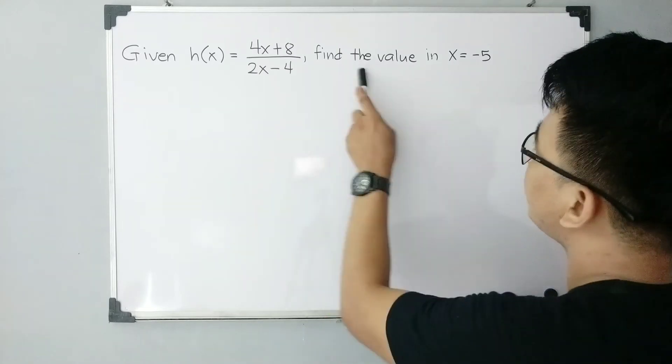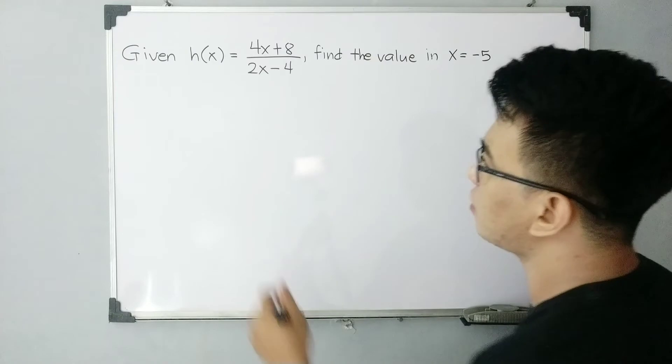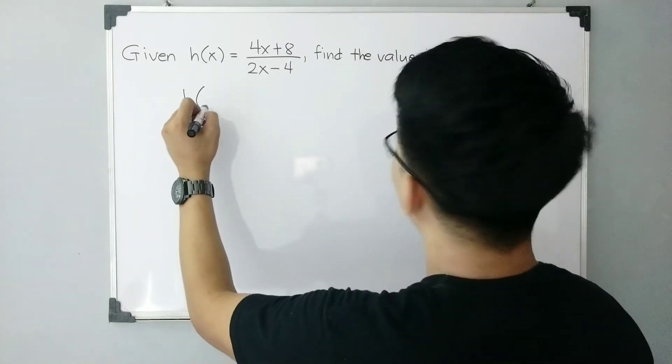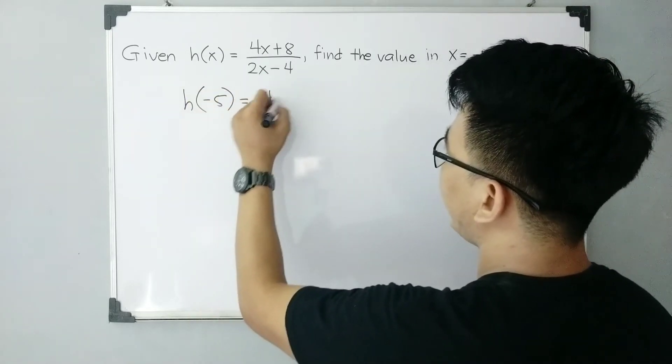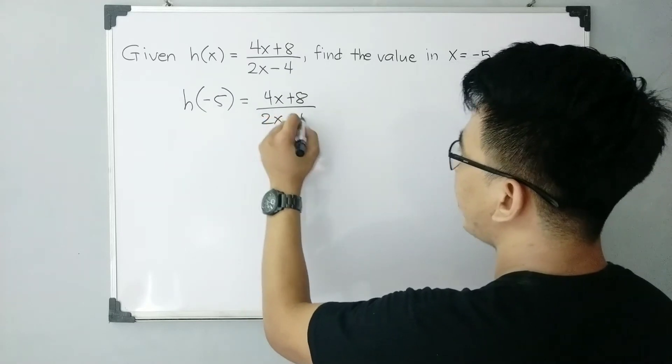So we are asked to find the value in x is equal to negative 5. So we are asked to find h of negative 5 is equal to 4x plus 8 over 2x minus 4.